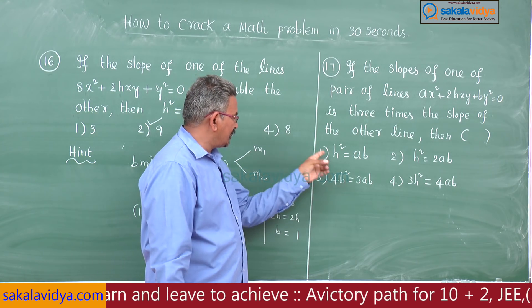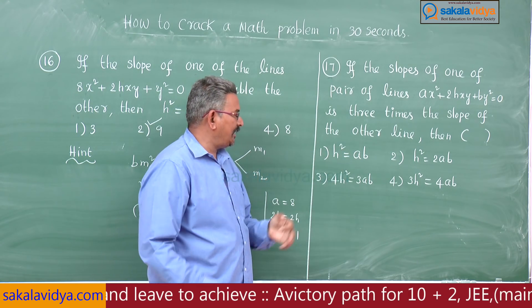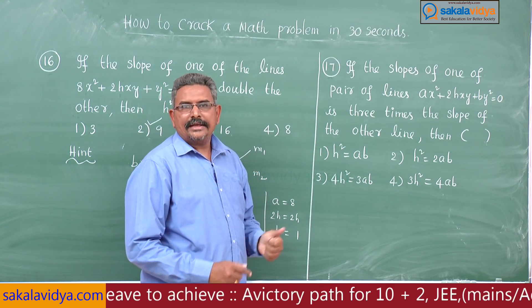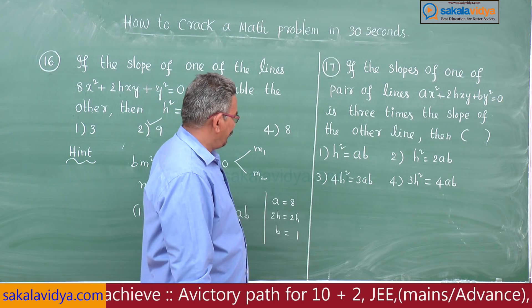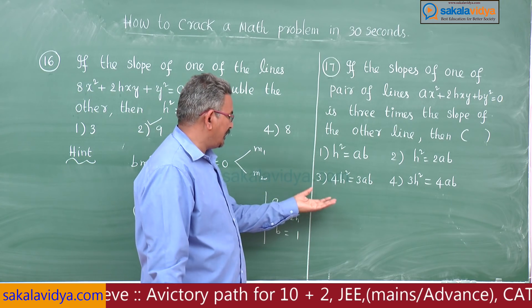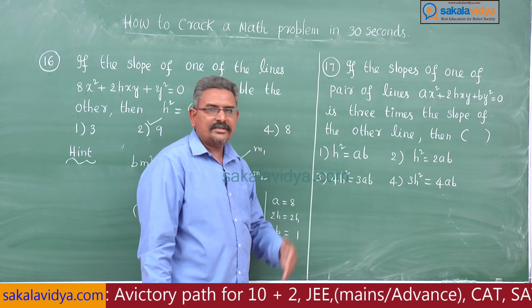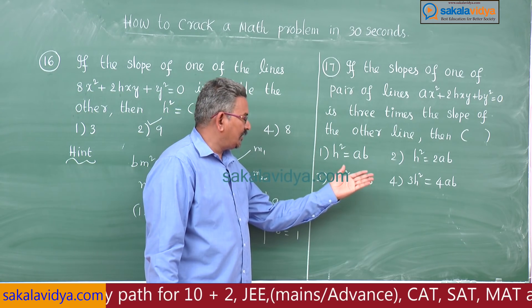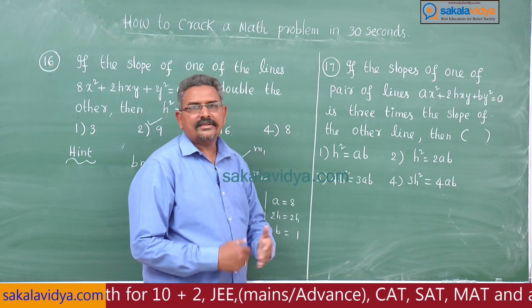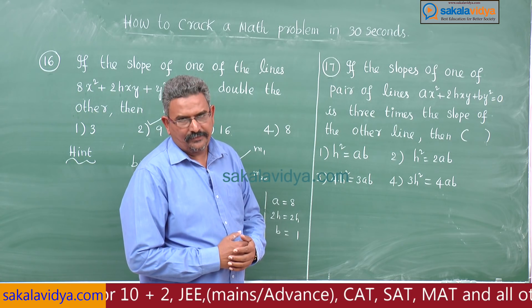First option: h² = AB. Second option: h² = AB. Third option: 4h² = 3AB. Fourth option: 3h² = 4AB.